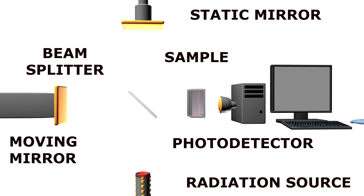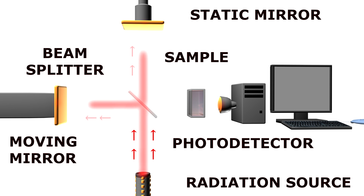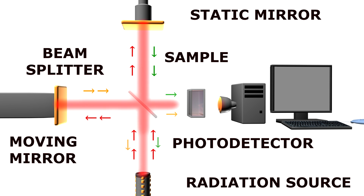Here's how it works. When the monochromatic infrared radiation emitted from the source reaches the splitter — which is basically a partially transparent mirror — some of the radiation passes through the splitter, while the other part is reflected. These two beams then reach the mirrors, where they are reflected back towards the splitter. At the splitter, both beams are split again, causing a part of the radiation reflected from the fixed and moving mirrors to recombine and go through the sample into the detector.